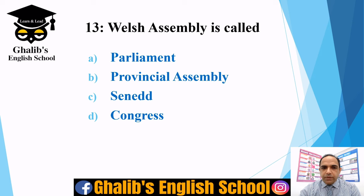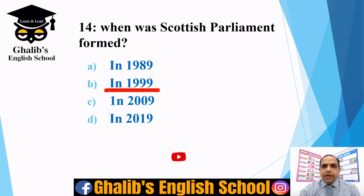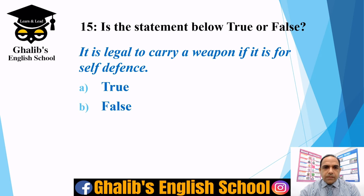Question thirteen: the Welsh Assembly is called what — Parliament, Provincial Assembly, Senate, or Congress? The Welsh Assembly is called the Senate. Question fourteen: when was the Scottish Parliament formed — in 1989, 1999, 2009, or 2019? The Scottish Parliament was established in 1999, along with the Welsh Assembly or Senate, and that was done during Tony Blair's Labour Party government.